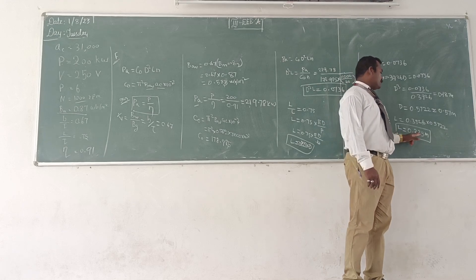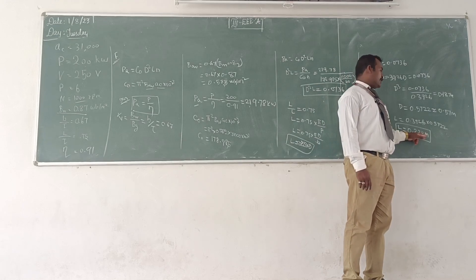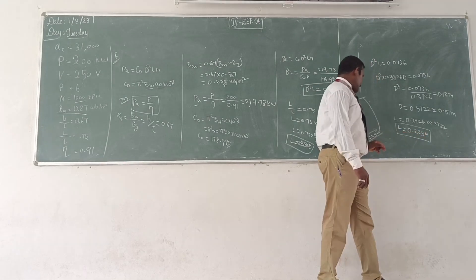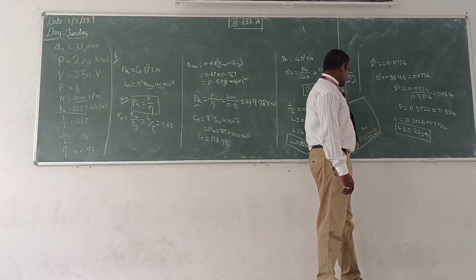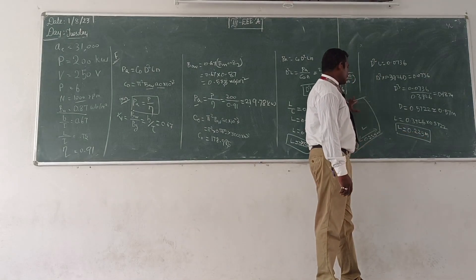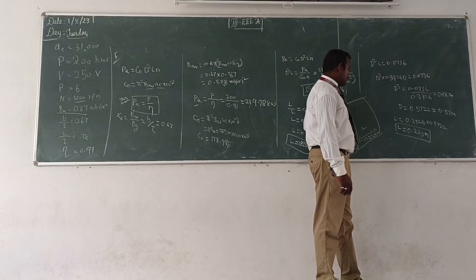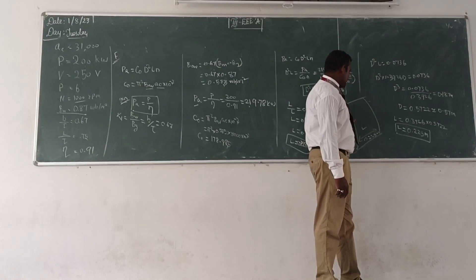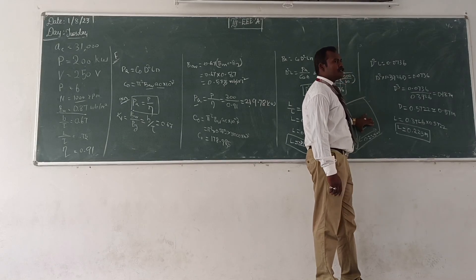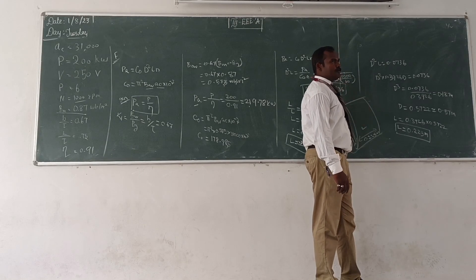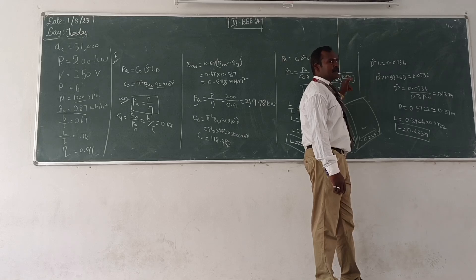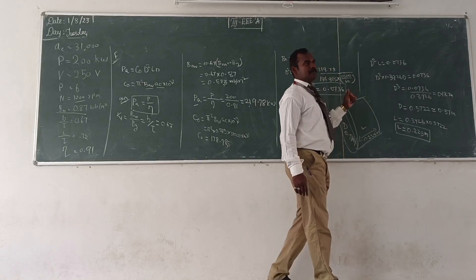L is found to be equal to 0.225 meter. So you can draw the diagram showing the main dimensions. The diameter and length are both obtained through this output equation. These are the main dimensions of the machine.